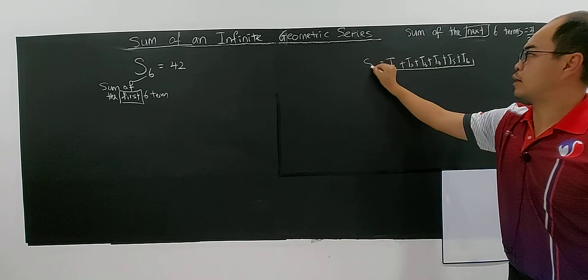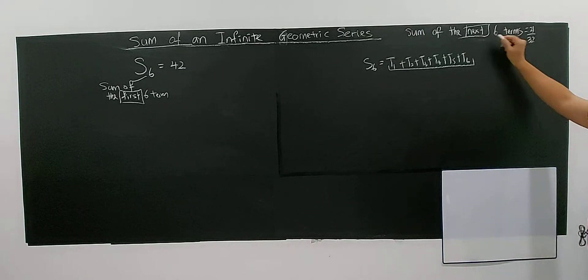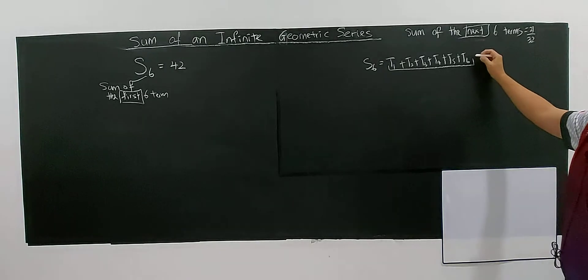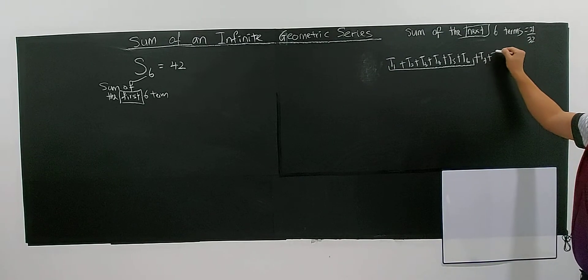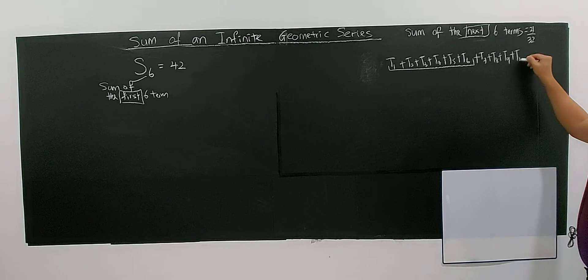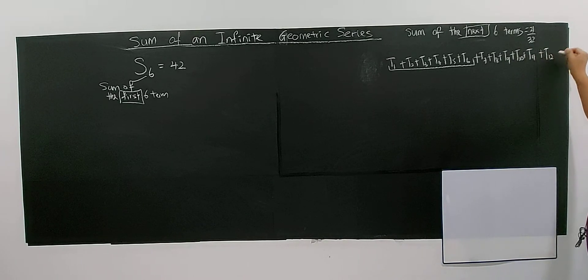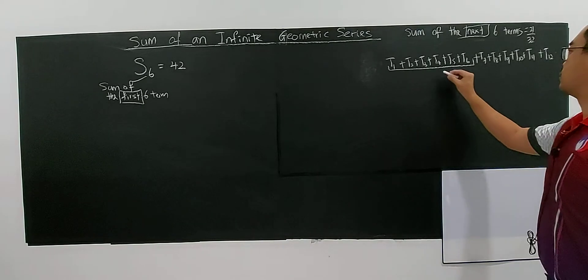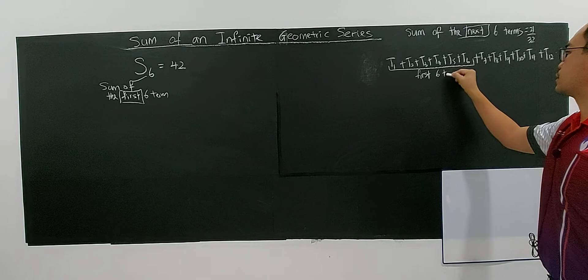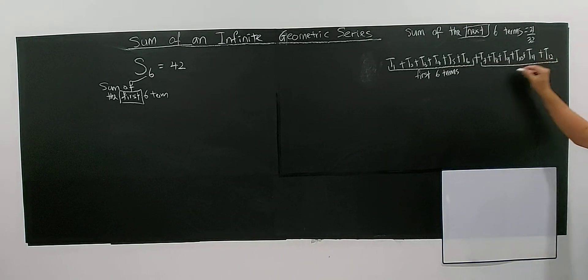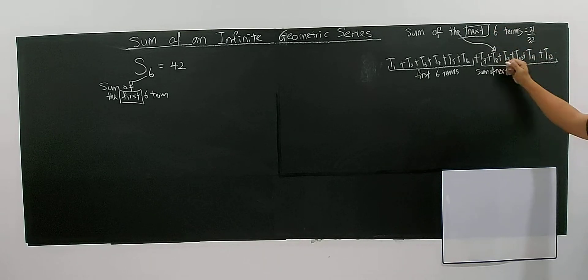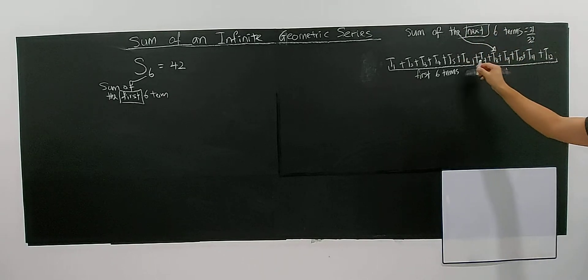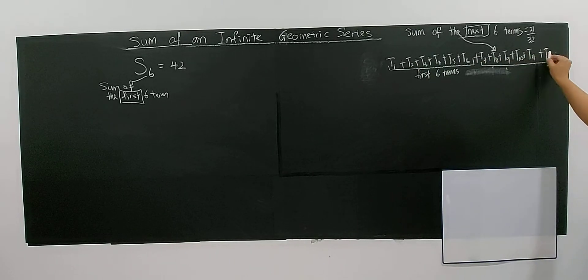From T1 to T6 is S6. The next six terms — T7 through T12 — is the 'next sum'. I stop at the 12th because the first six and then the next six. Sum of the next six is T7 to T12, totalling 6 terms. So how to find this sum of the next six?